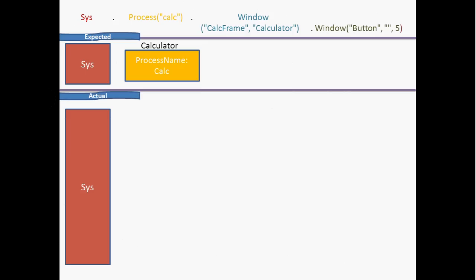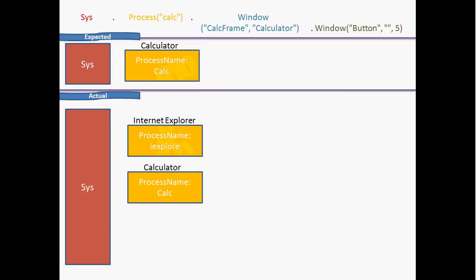For this process, there is a property called ProcessName that is used to identify it. TestComplete travels through all available processes within the operating system. It first looks at Internet Explorer — the process name is 'iexplore', which doesn't match 'calc', so it skips it. Next there is a calculator process whose process name is 'calc', which matches the expected value. Both are matched, so TestComplete understands this is the process it has to work with.